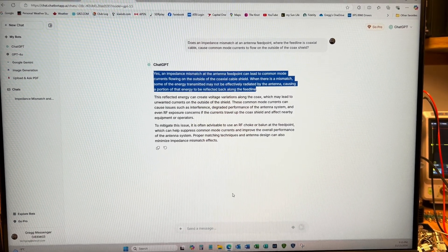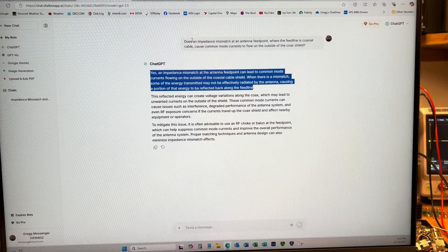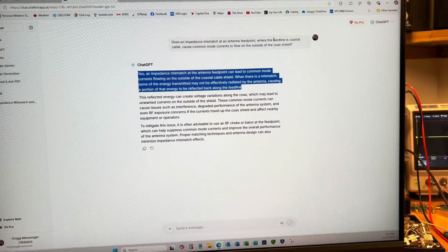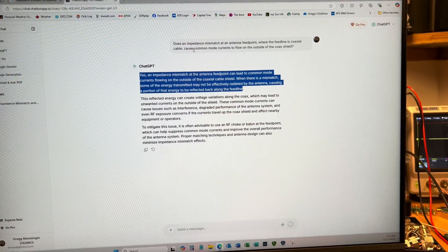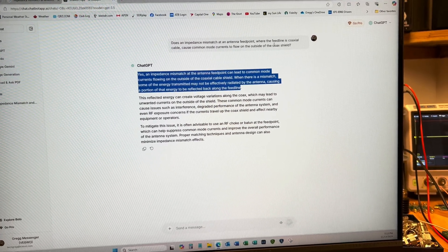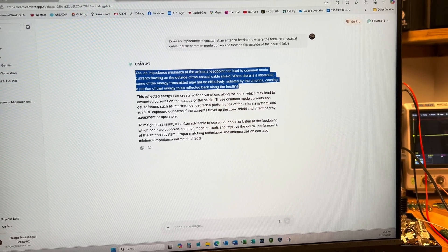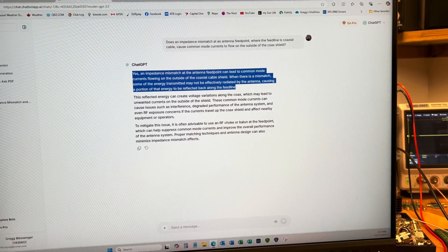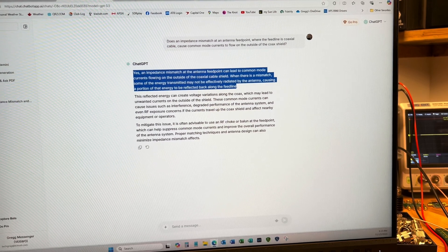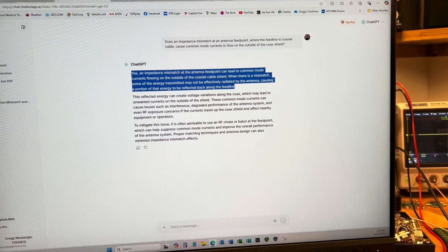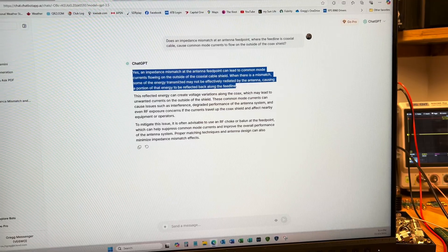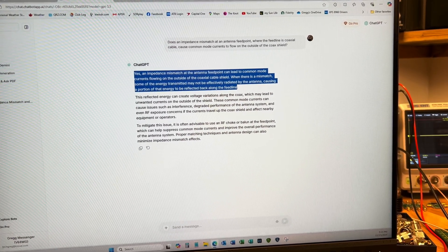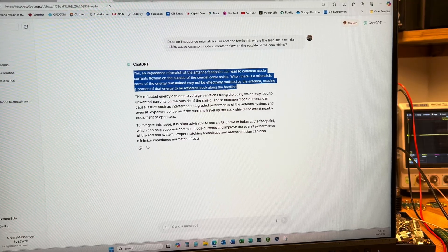How about ChatGPT? Does it do any better? I asked it: does an impedance mismatch at an antenna feed point where the feed line is coaxial cable cause common mode currents to flow on the outside of the coaxial shield? ChatGPT thought for a bit and came back and said yes. An impedance mismatch at the antenna feed point can lead to common mode currents flowing on the outside of the coaxial cable shield. When there is a mismatch, some of the energy transmitted may not be effectively radiated by the antenna, causing a portion of that energy to be reflected back along the feed line.